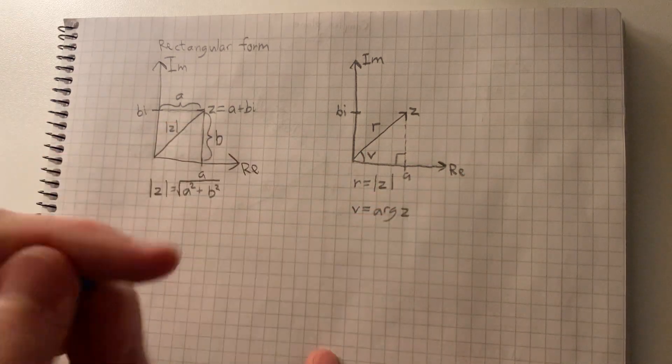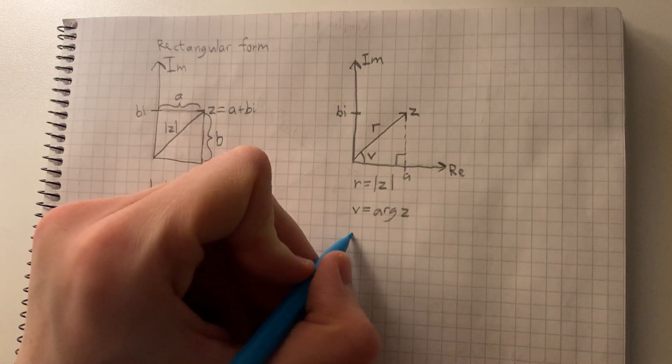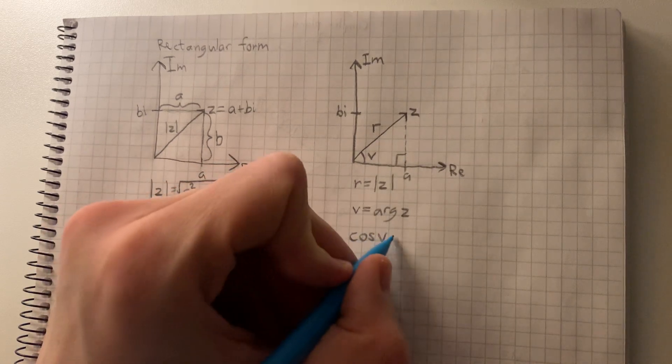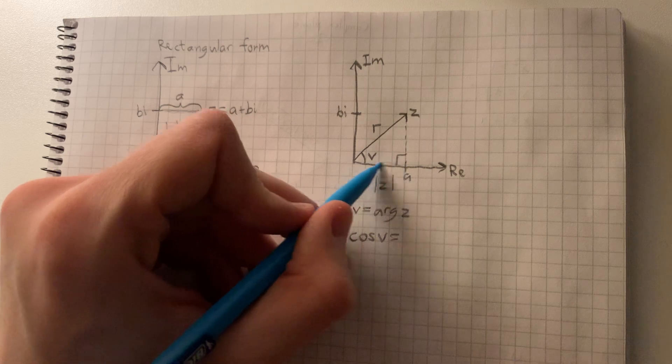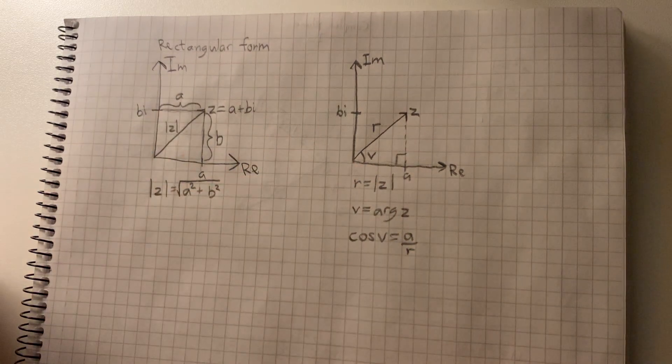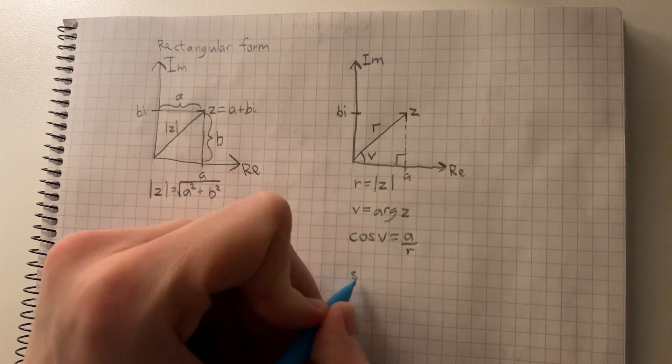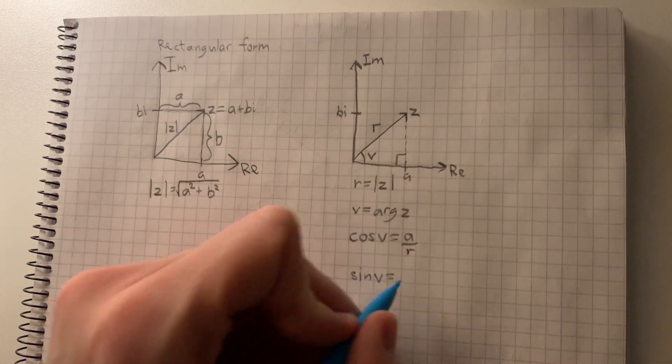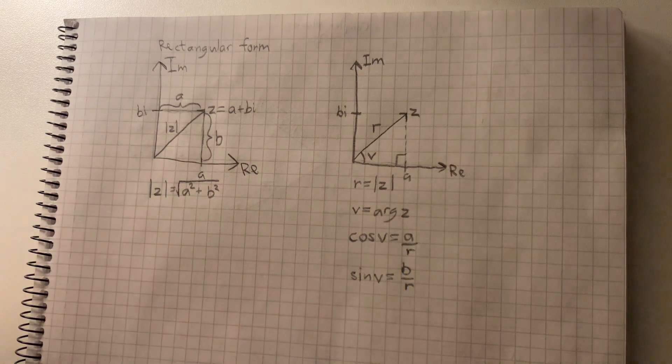We then see that cosine of V is equal to a divided by R, and sine of V is equal to b divided by R.